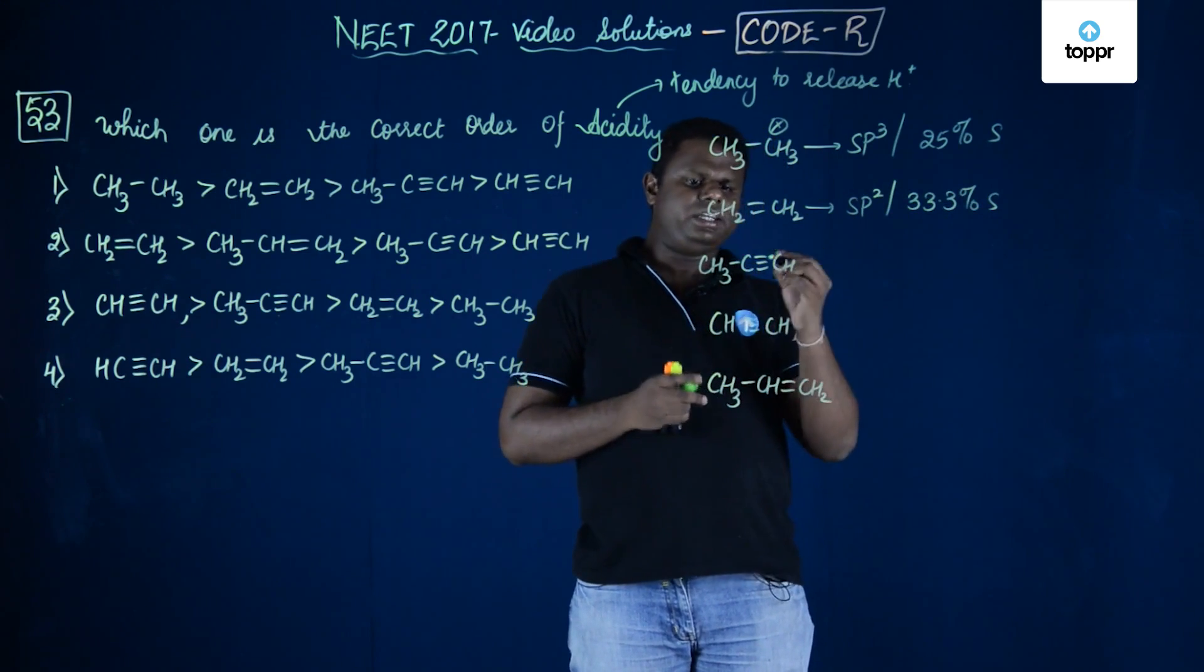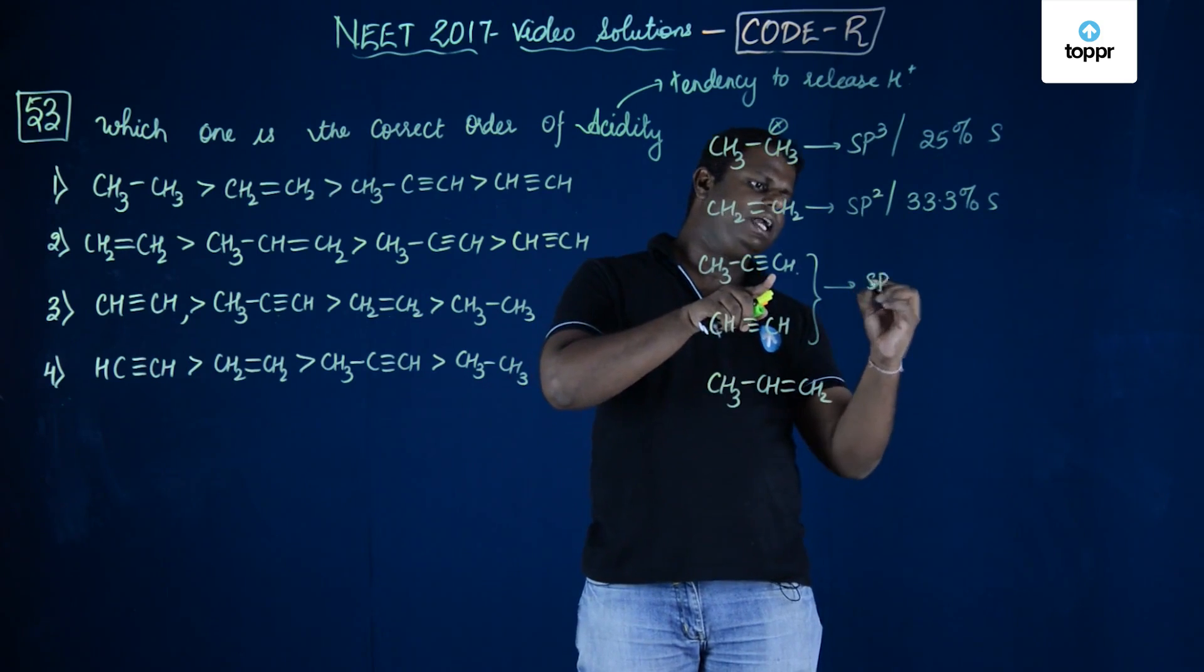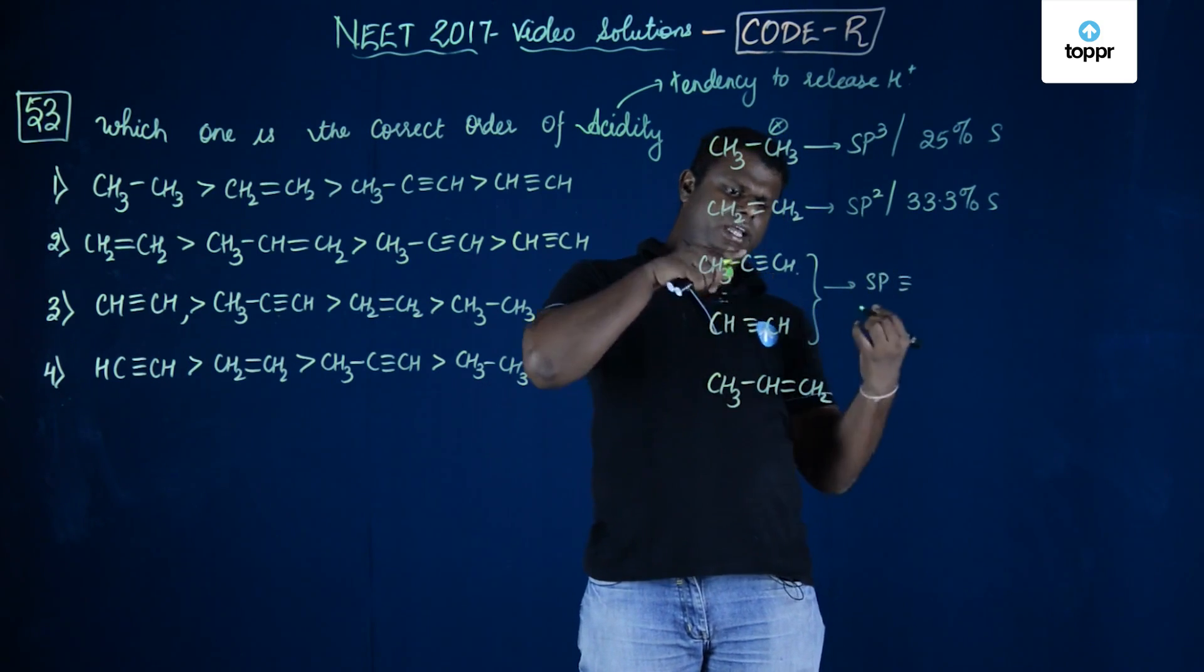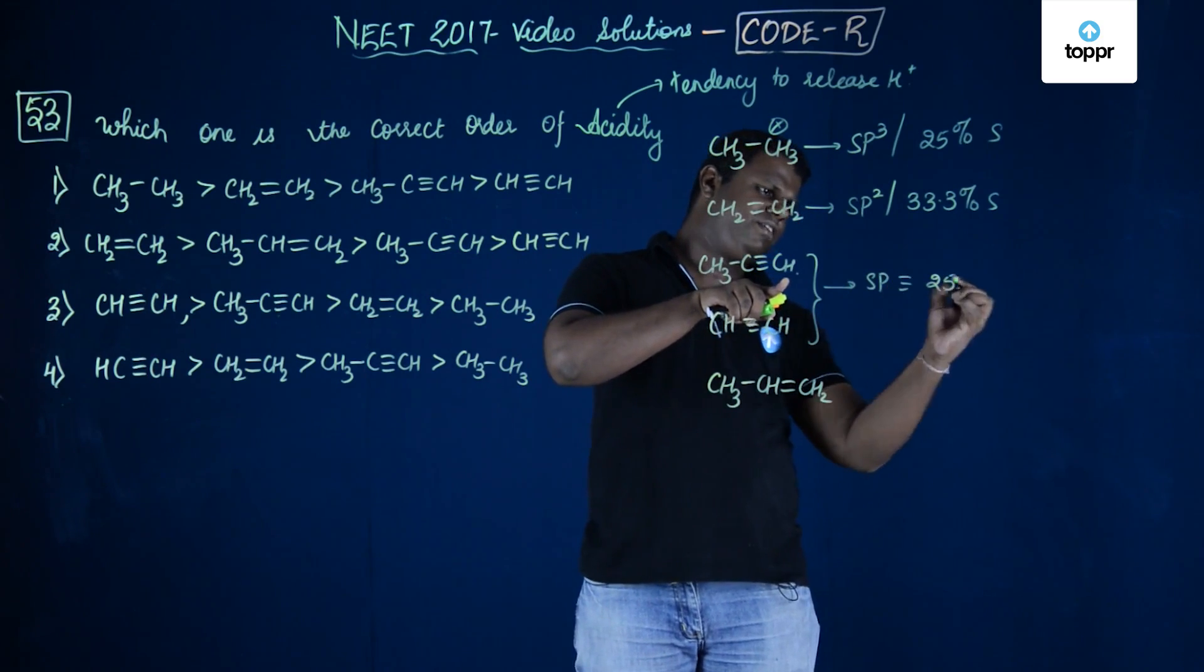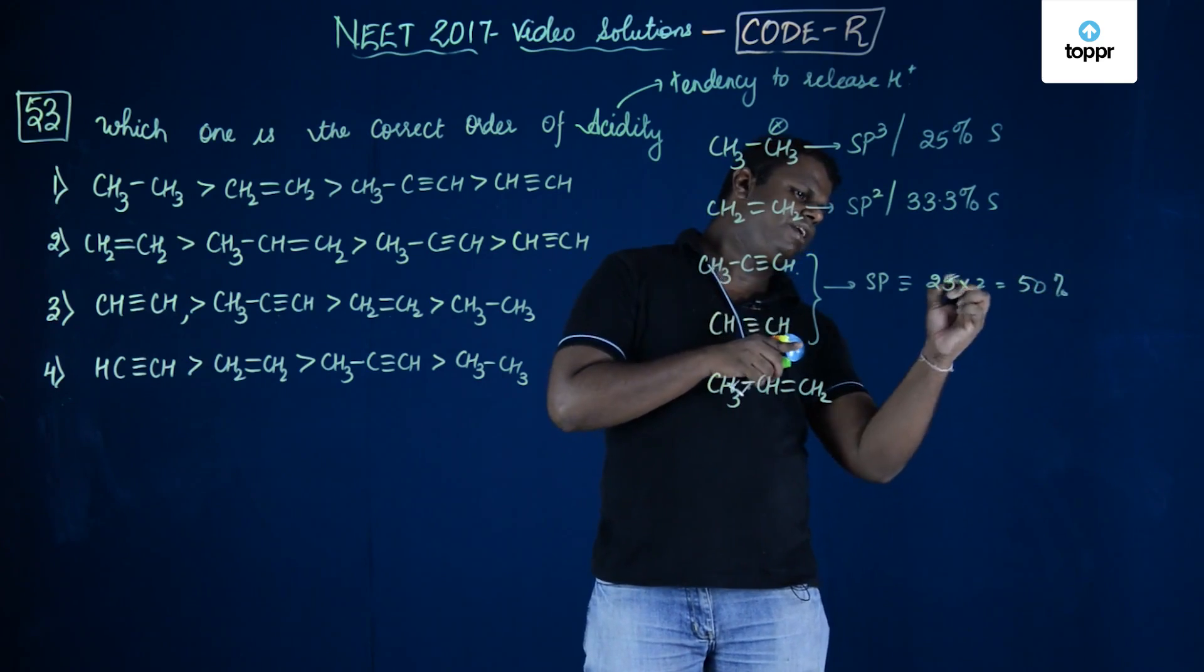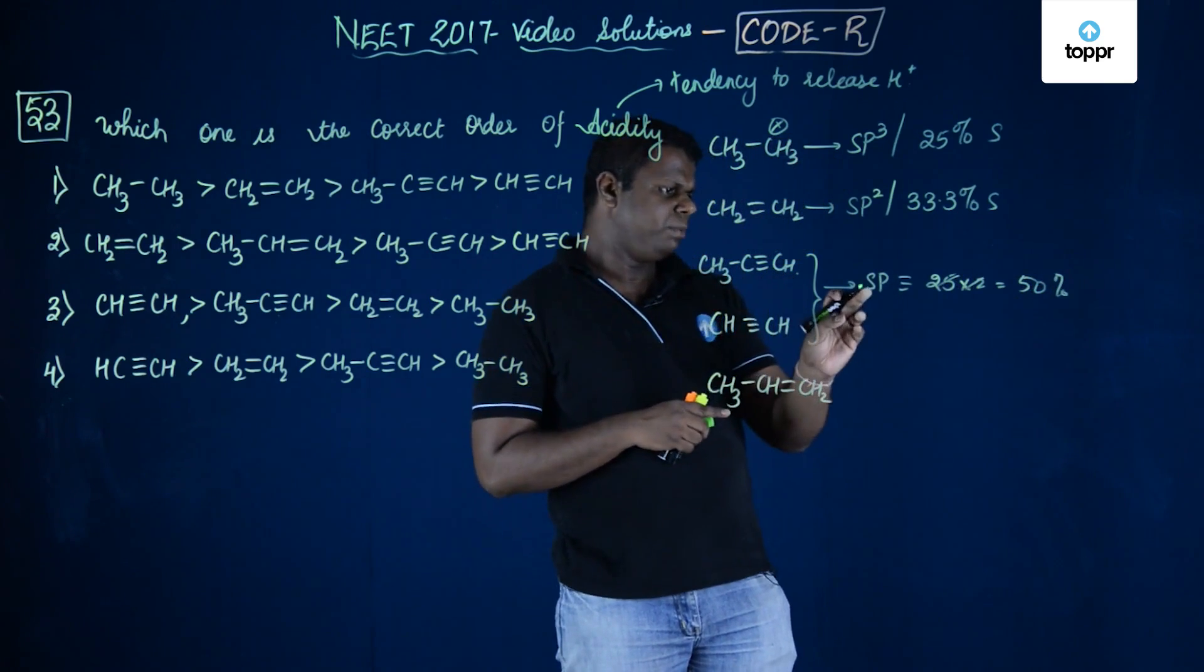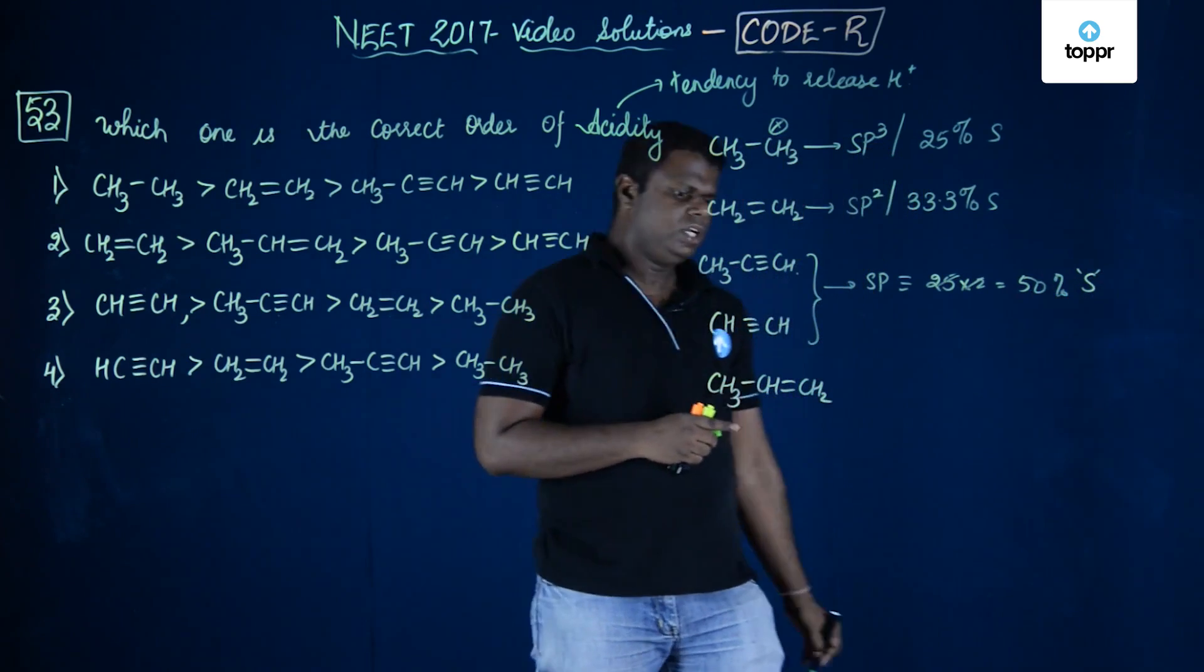Whereas if you could see these two, they have this carbon as SP hybridized and that is having basically 50%. So 50% S and 50% P. I would simply write 50% S character.